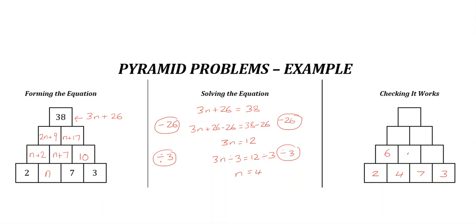4 is 6, 4 plus 7 is 11, 7 plus 3 is 10. 6 and 11 is 17, 11 and 10 is 21.